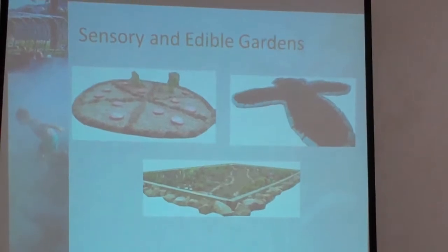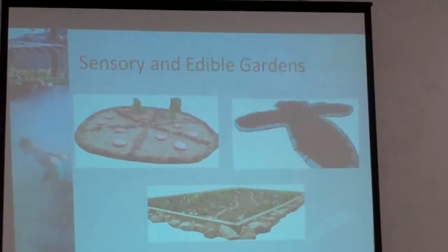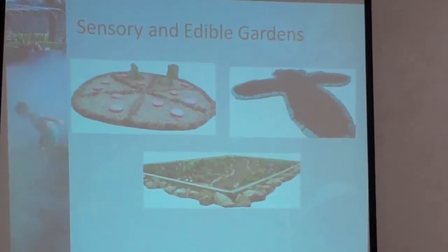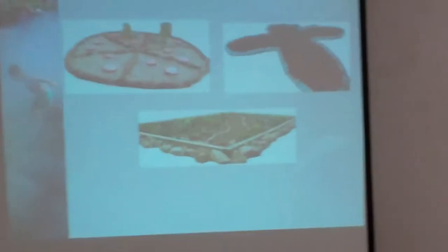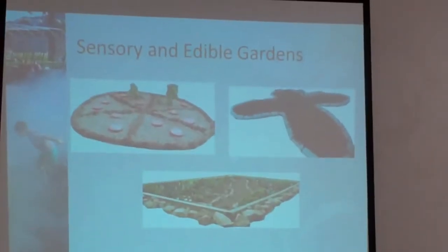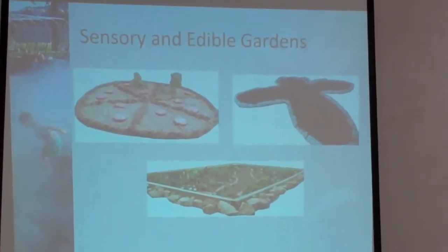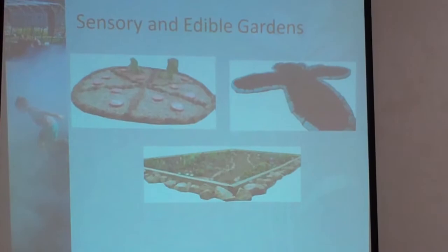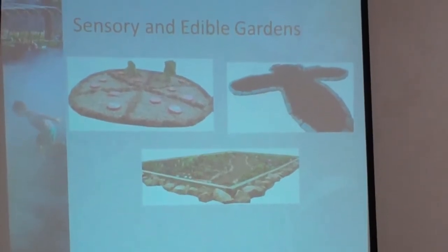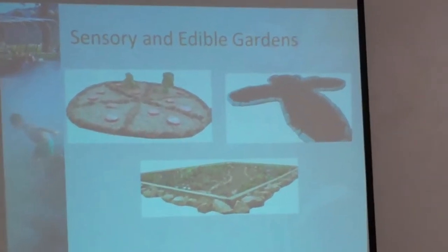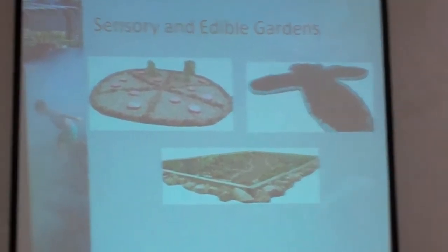Edible gardens. We miss out so many times because we're not teaching kids where food comes from, how do you make it, how do you grow it. Let's grow it, then let's cook it. All these things we could teach kids not only from a science standpoint, but from a safety standpoint.